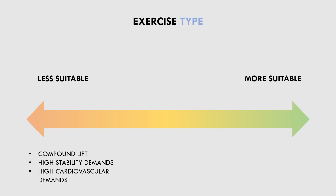Furthermore, compound lifts have higher cardiovascular demands because more muscles are working simultaneously and heavier loads are lifted. On the other side of the spectrum, isolation lifts with low stability demands are more suitable for metabolite style training, as the target muscle will almost always be the limiting factor. Exercises between these two extremes — like a seated cable row, which is technically compound but not as globally fatiguing as a back squat — may use moderately short rest periods to capture some metabolite benefits without going excessively short.